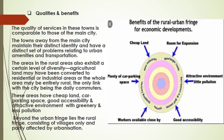These areas have cheap land, car parking spaces, good accessibility, and an attractive environment with greenery and less pollution. The lands have a cheaper rate compared to urban land, more car parking space, good accessibility due to transport facilities, and an attractive environment with lots of greenery and trees, which results in less pollution. Beyond the urban fringe lies the rural fringe, consisting of villages that are only partly affected by urbanization.